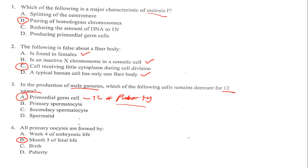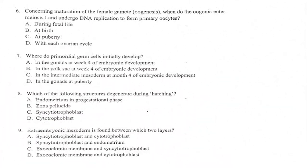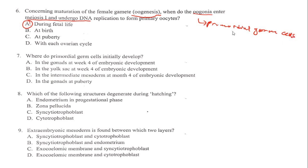The next question concerns maturation of the female gametes, which is oogenesis: when do the oogonia enter meiosis one to undergo DNA replication? This process occurs during fetal life. The oogonia, coming from the primordial germ cells, enter meiosis one during fetal life. By month five of fetal life, the primary oocytes have already been formed. Where do primordial germ cells initially develop? Check part one of the revision for that answer.